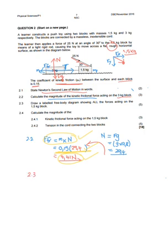They now ask us to draw a labeled free body diagram showing all the forces acting on the 1.5 kg block. We have Fg acting downwards, the normal perpendicular to the surface, a 25 N applied force at an angle, tension from the 3 kg block pulling to the left — because the tension on the 3 kg is to the right, the tension on the 1.5 kg is in the opposite direction — and friction also acting on this object.